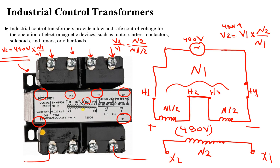So if you have a supply in the 220–240V range, use the parallel connection, and if you have a supply in the 440–480V range, use the series connection. Both configurations give you the same output voltage — that's the key advantage of this design.